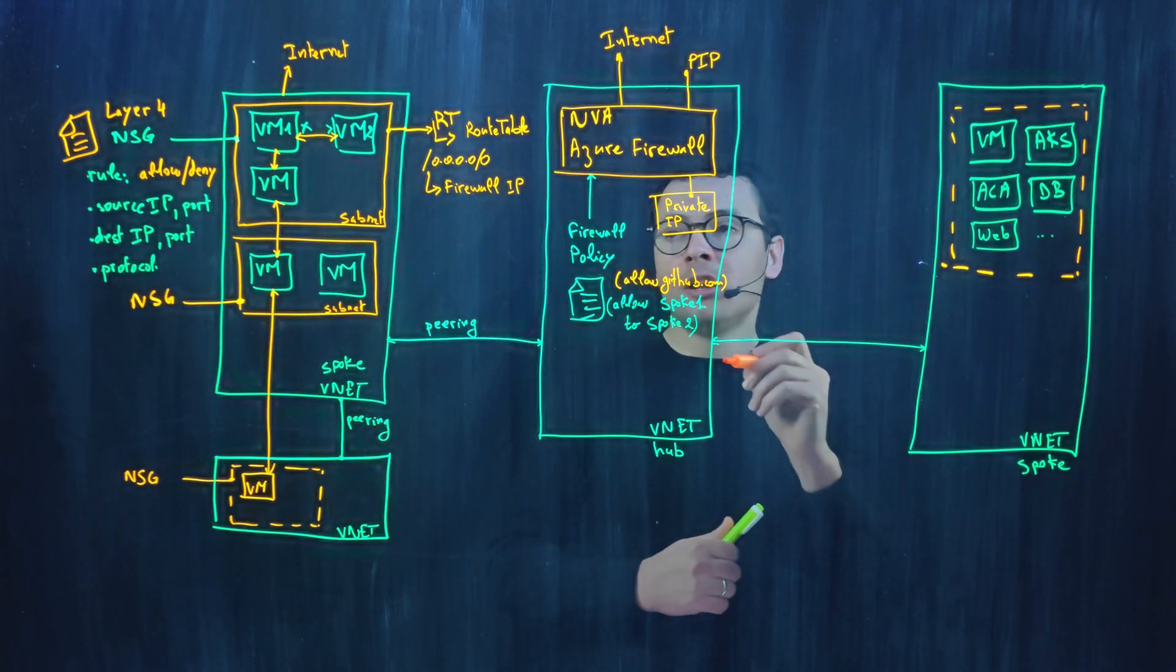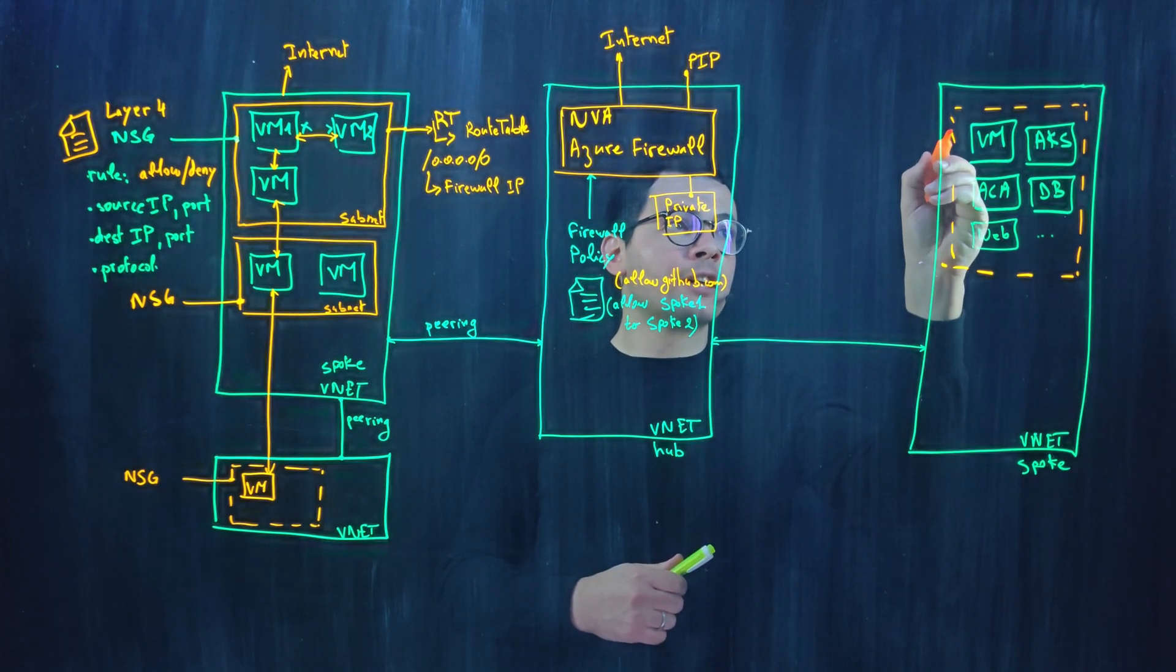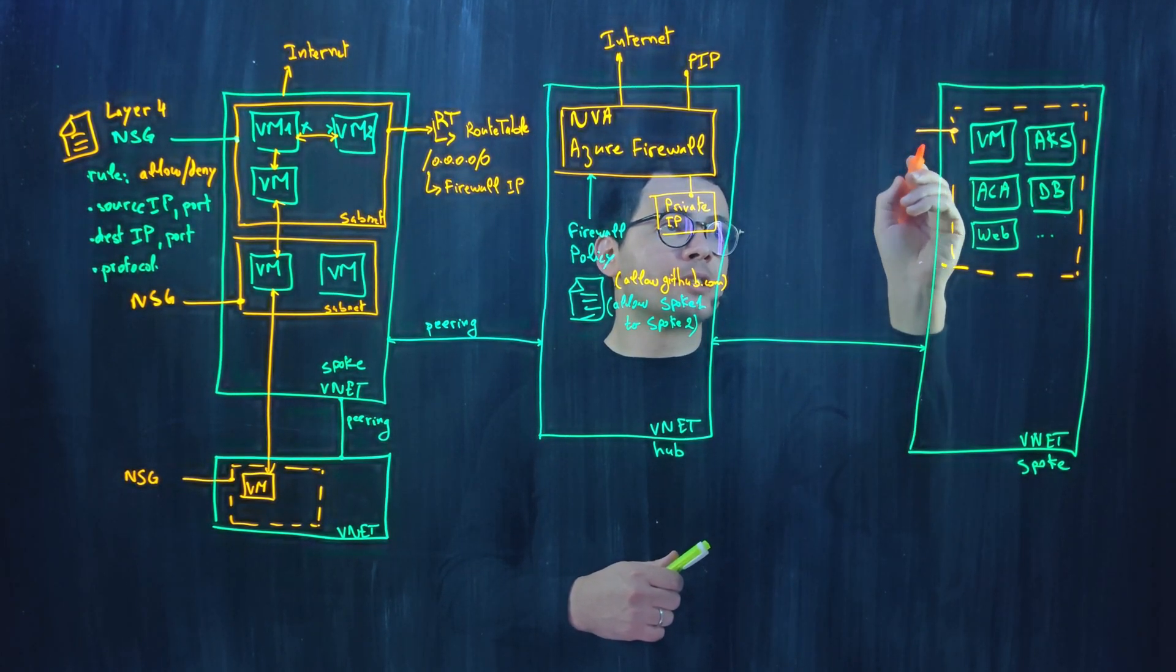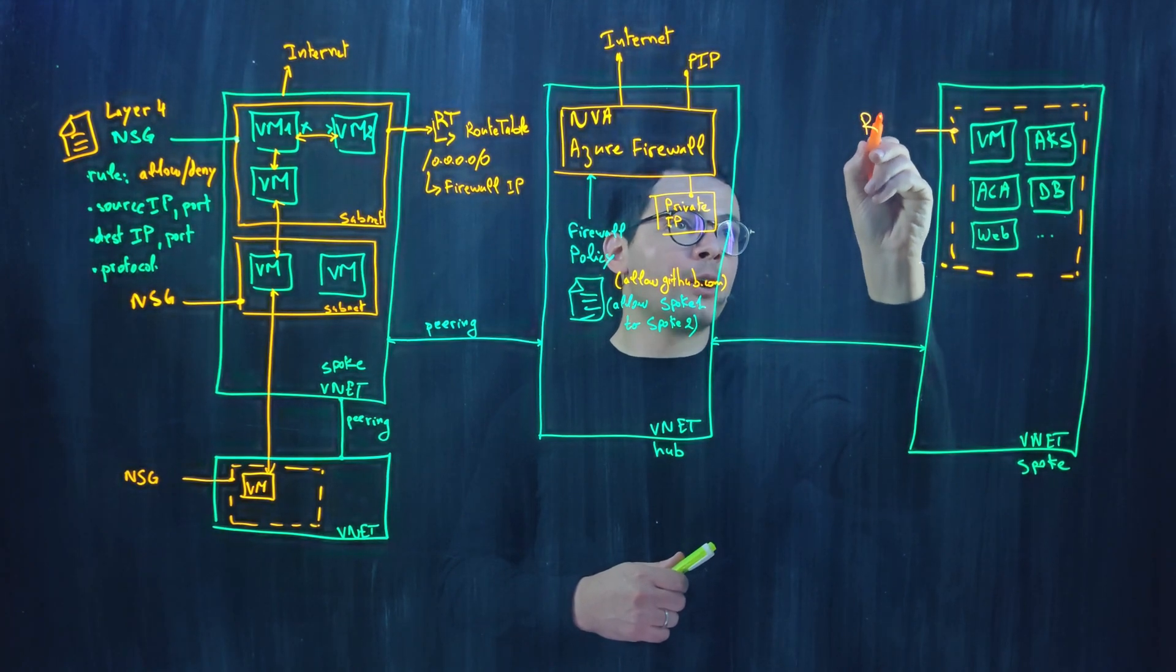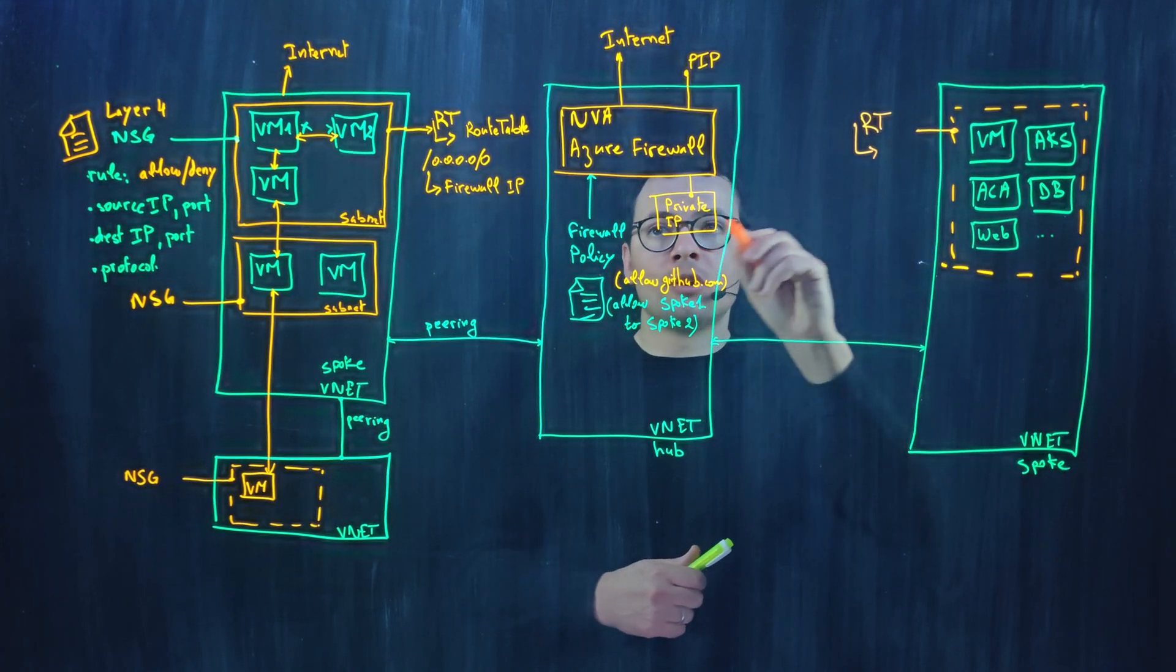With the hub and spoke model, typically all the spokes would have a route table that is attached to its subnets that will route the traffic to the Azure firewall.